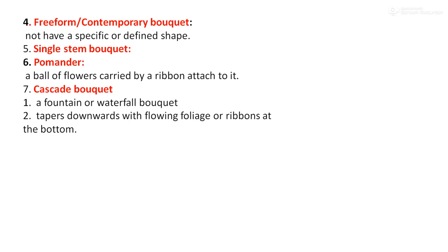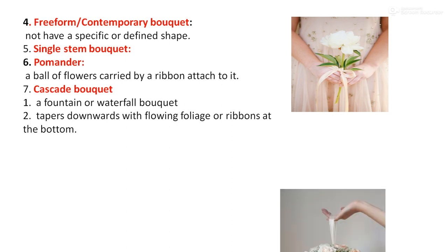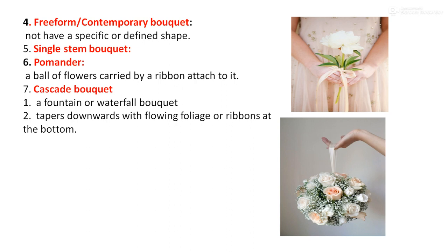The free form or contemporary type of bouquet does not have a specific or definite shape. Then the single stem bouquet, as shown in the figure, where single flowers are arranged in a bouquet. The pomander type of bouquet is a ball of flowers carried by a ribbon attached to it.